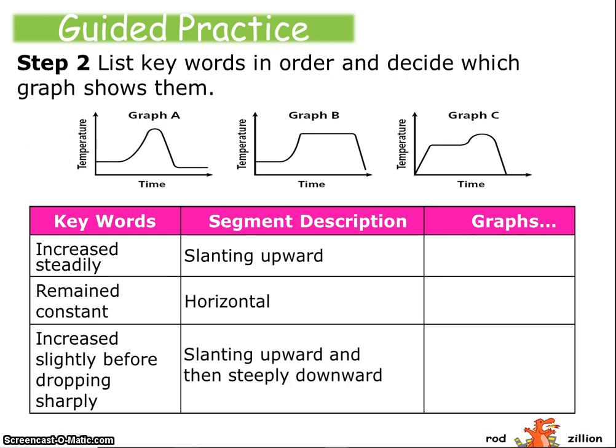That means I should expect some slanting upward, some horizontal plateau portion of the graph because it remains constant, and then some slanting upward and then steeply downward.